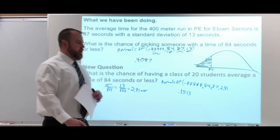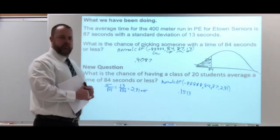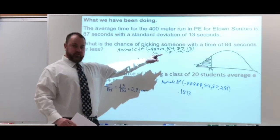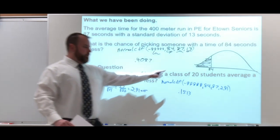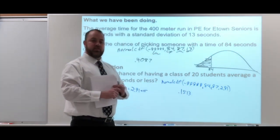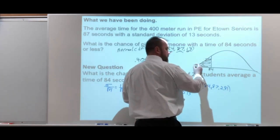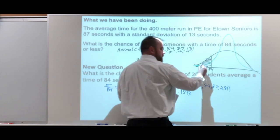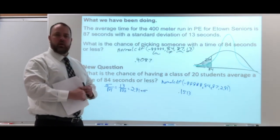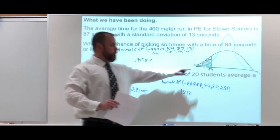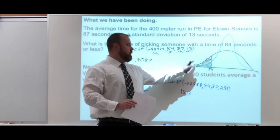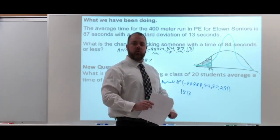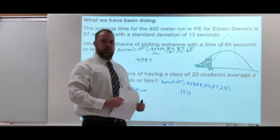So we have our lower bound, upper bound, mean, and standard deviation — but look how much smaller our probability is now: 0.1513. Think about what's happening to our curve. Our standard deviation went from 13 to 2.91, so our curve is going to be much taller and skinnier, with everything getting closer to the center. The shaded area got much smaller. Since we are looking for a probability far from the average and we shrank the standard deviation, everything got pulled closer to the average and away from the area we were looking for. So it makes sense that the probability is a little smaller.